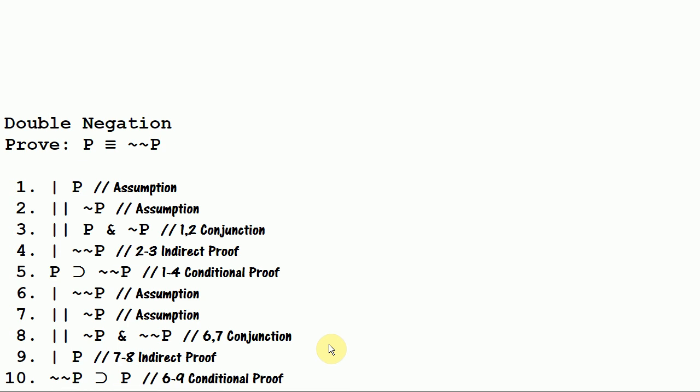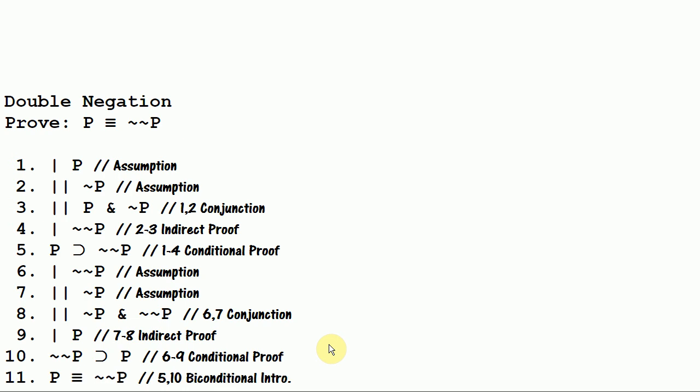And then on line ten we get if not not P then P through conditional proof. And finally we use biconditional introduction to get P if and only if not not P.